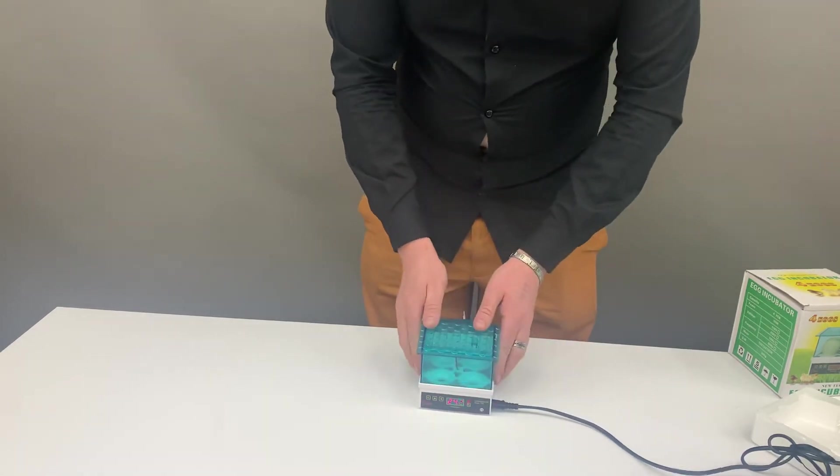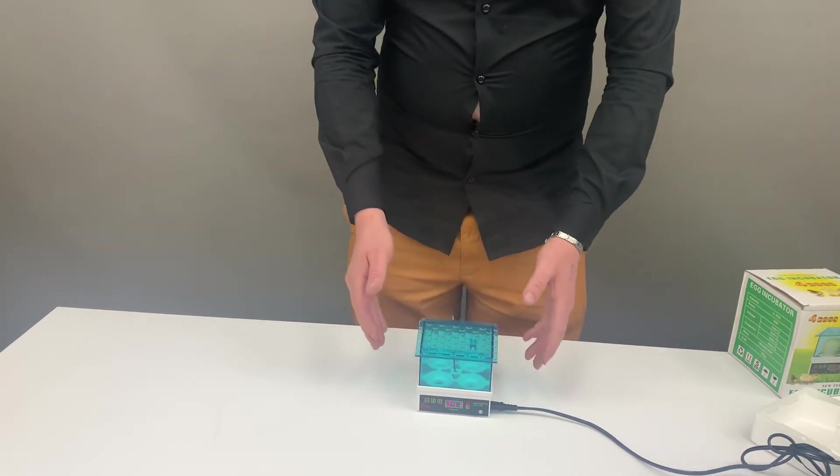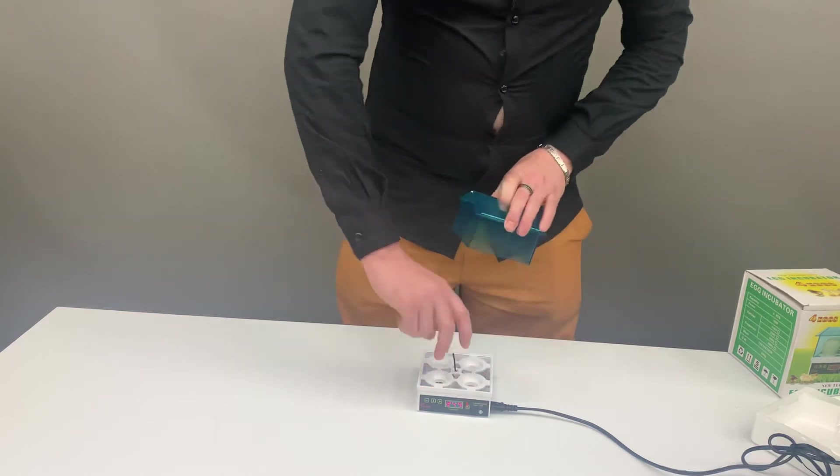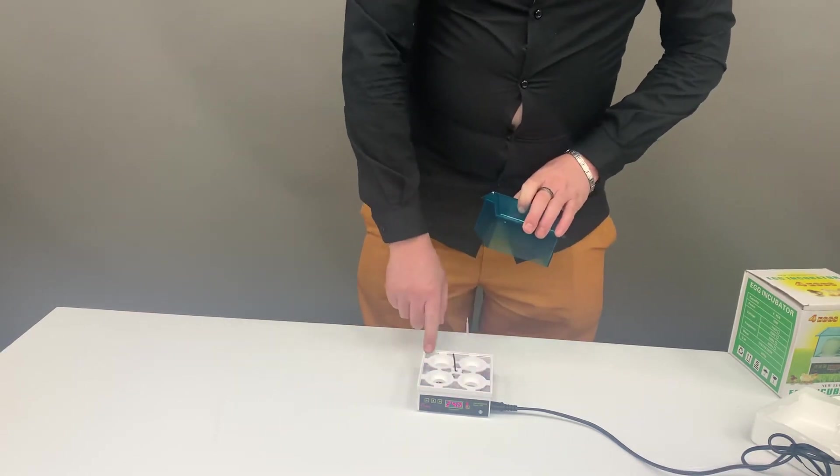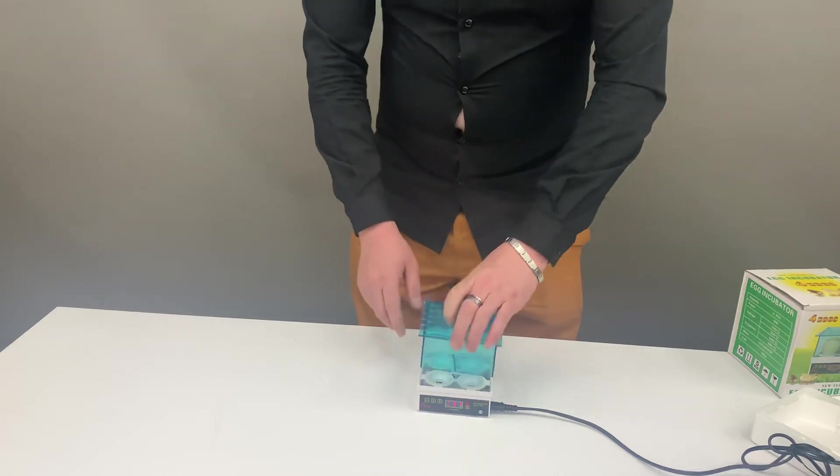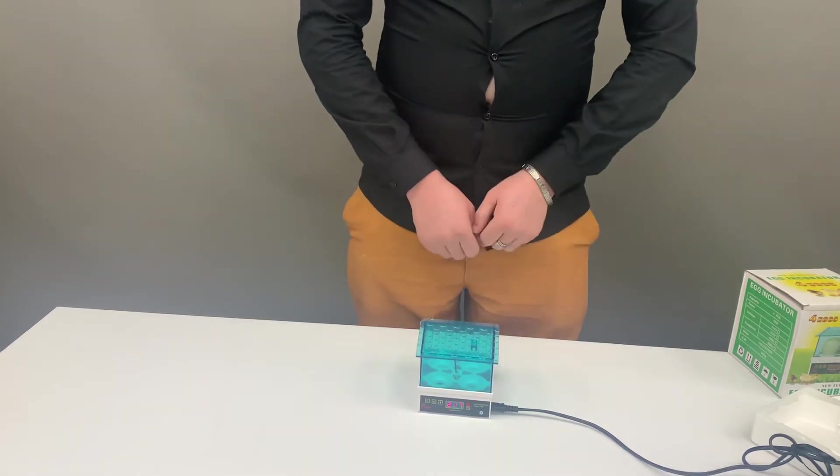Once you place your eggs in, close your unit and then turn those eggs at least two to three times a day. You'll be opening the lid and turning the egg like this, then checking your water at the back is half full, and then close your lid. You repeat this process for 18 days.